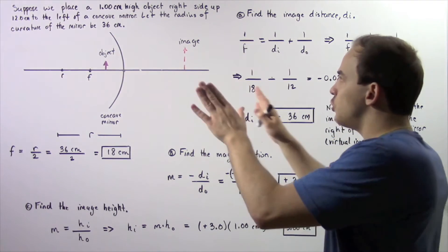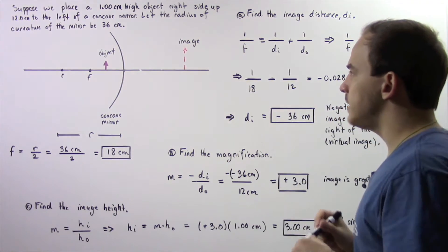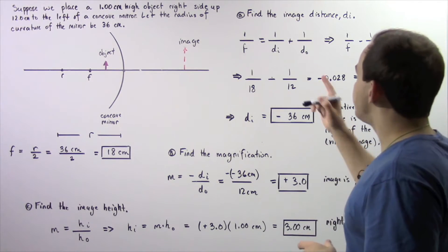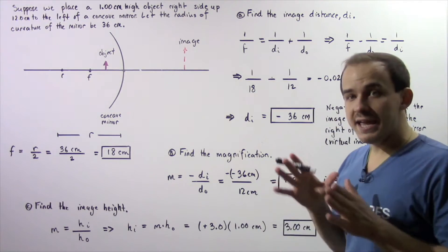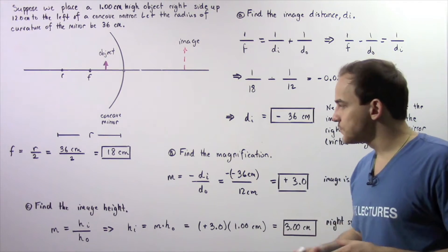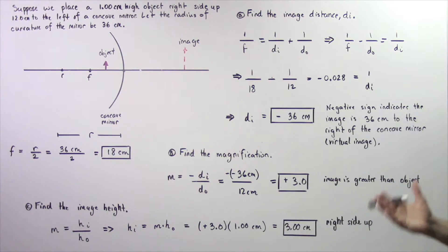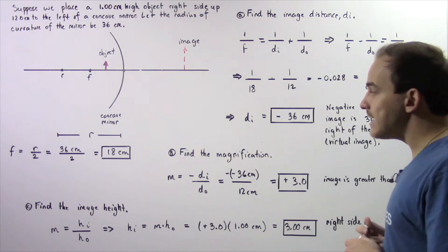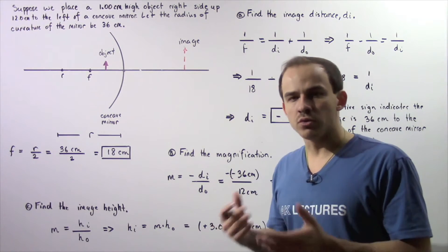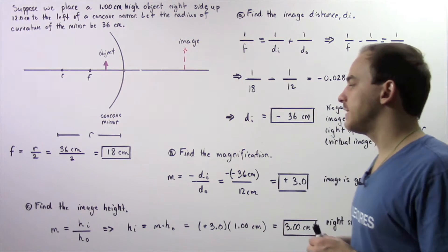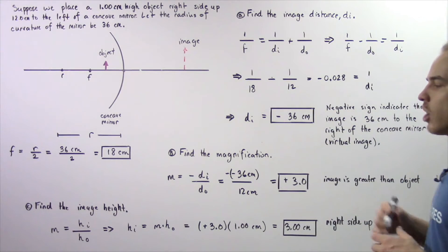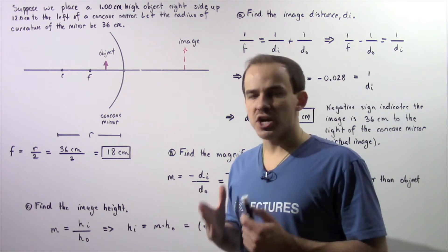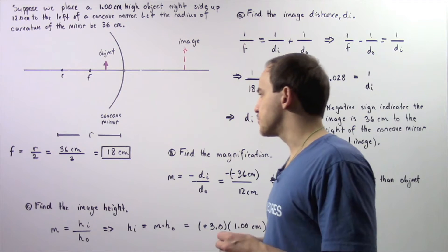Using the given information, in part A we want to find the image distance. In part B we want to find the magnification, also known as the lateral magnification. And in part C we want to find what the image height is.